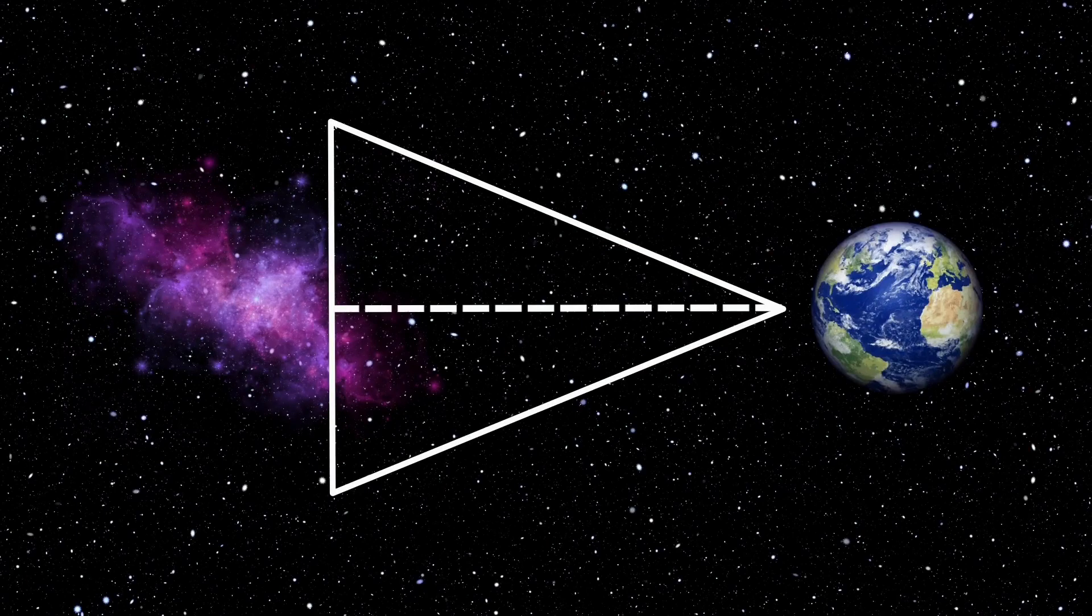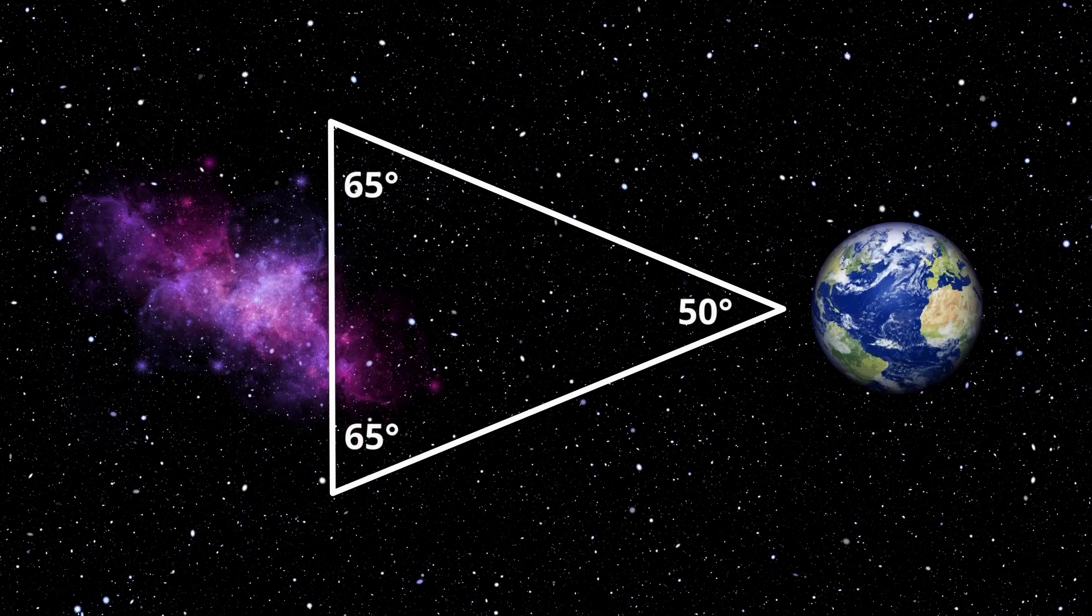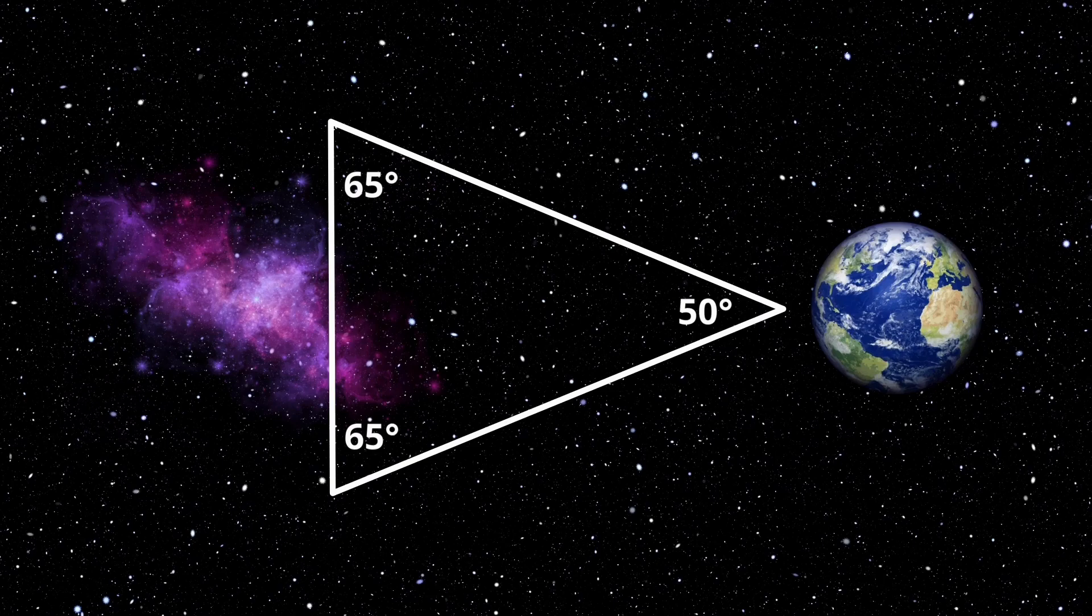In the second method, the angles added up to 180 degrees, with a higher margin of error compared to the previous case, which also tells us that this is a flat universe.